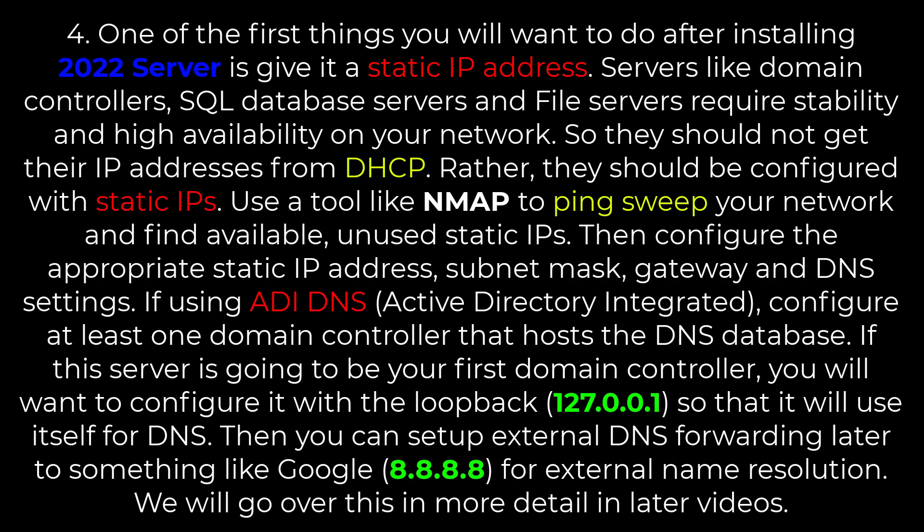One of the first things you will want to do after installing Windows Server 2022 is give it a static IP address. Servers like domain controllers, SQL database servers, and file servers require stability and high availability on your network, so they should not get their IP addresses from DHCP. Rather, they should be configured with static IPs.